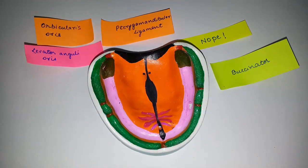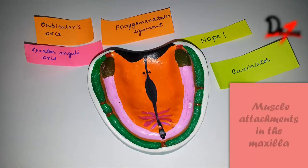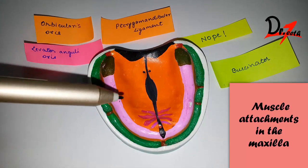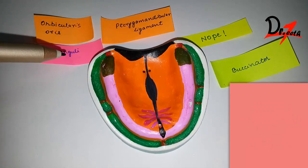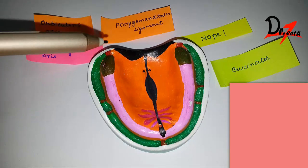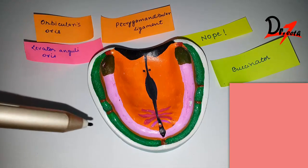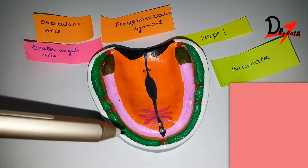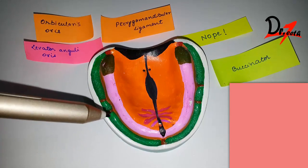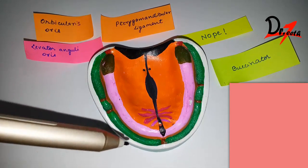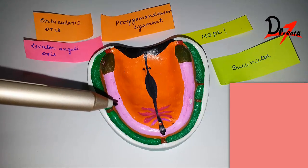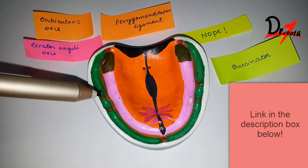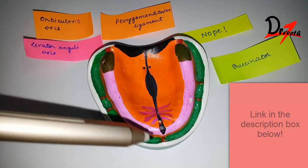Assalamu alaikum. Today we will be studying about the muscle attachments in the maxilla or the maxillary cast. I have these page markers and on these page markers I have mentioned some muscles, and we'll try to arrange these page markers based on the position they occupy in the mouth. I would suggest you to watch the video on the anatomical landmarks first, and I will leave the link in the description box below.